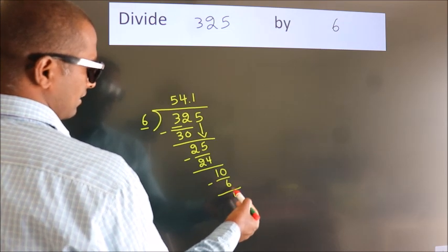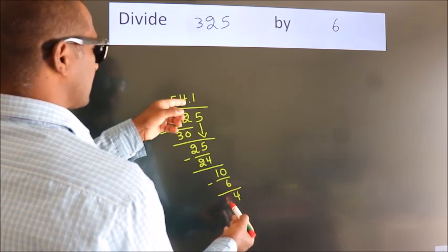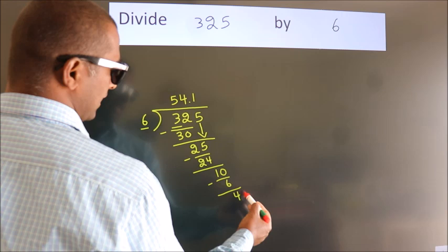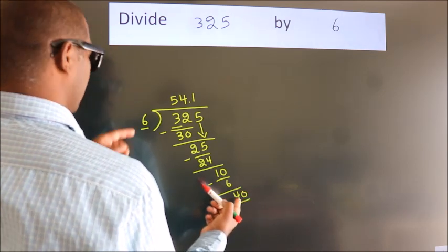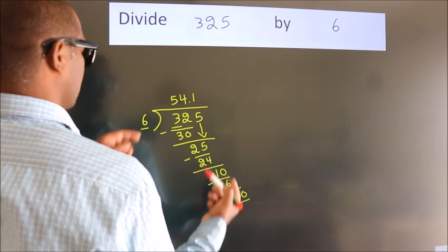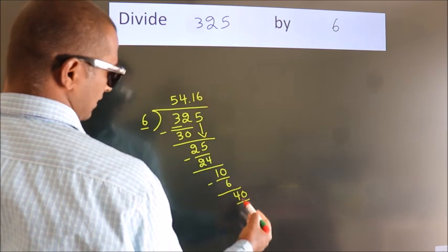After this, we already have the decimal, so directly take 0. So, 40. A number close to 40 in the 6 table is 6 sixes, 36.